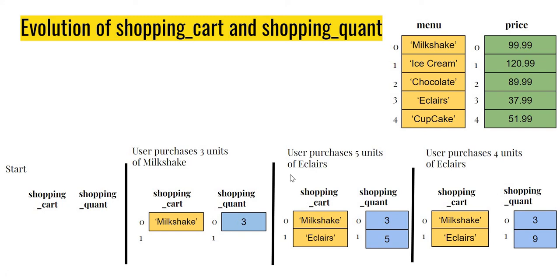The shopping continues until the user presses six to exit. Say the next purchase is five units of eclairs — we add eclairs to shopping_cart, and since the user wants five units, we put five in shopping_quant. Notice that shopping_cart changed: previously it had milkshake, now it also has eclairs. After these two purchases, shopping_cart contains milkshake and eclairs, and shopping_quant contains 3 and 5.